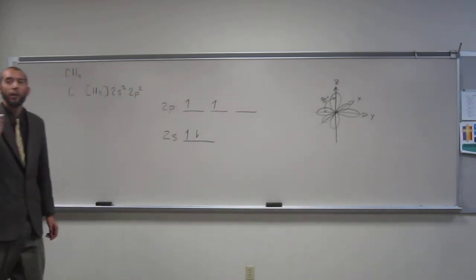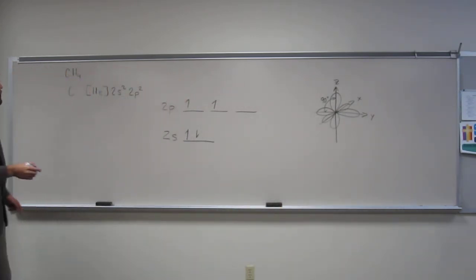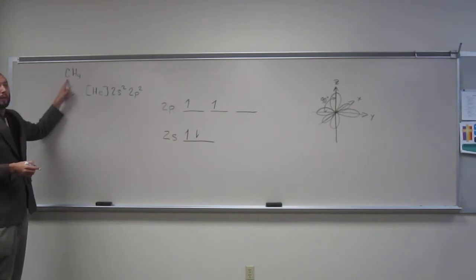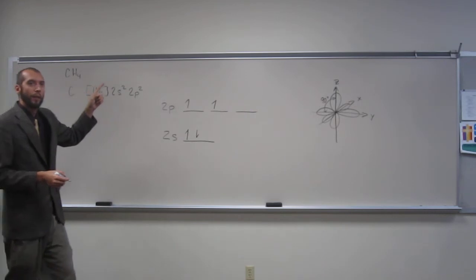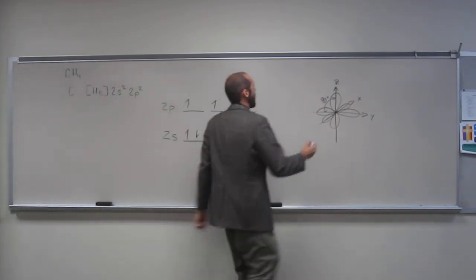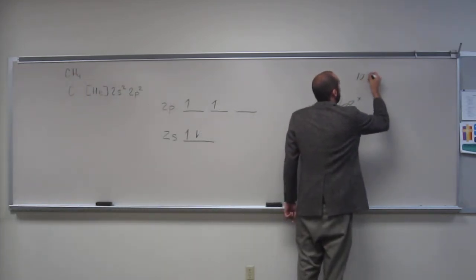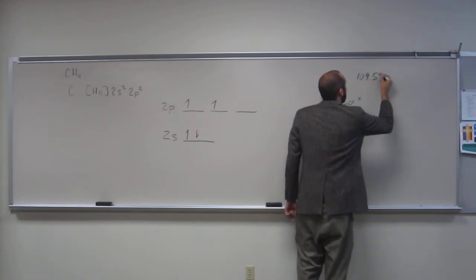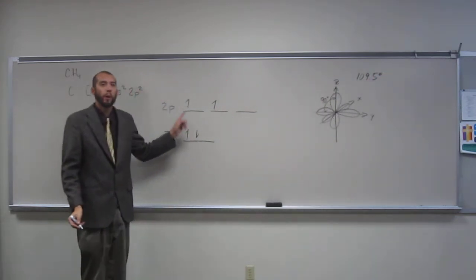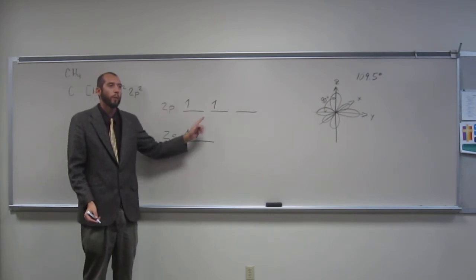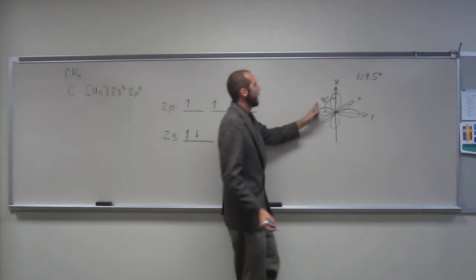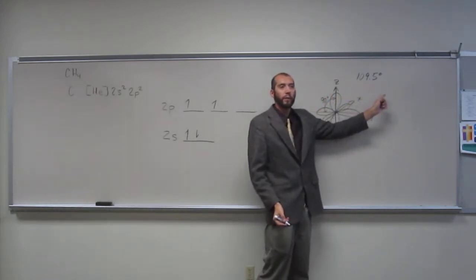So we know for a fact that the bond angles in methane are what? Do you guys recall? 109.5. So if they were bonding with atomic orbitals, they would be 90 degrees, not 109.5.